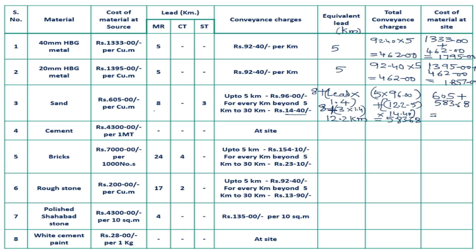Cost of material at site is equal to 605 plus 583.68. Total cost is equal to 1188.68 rupees, which we can round to 1189 rupees.